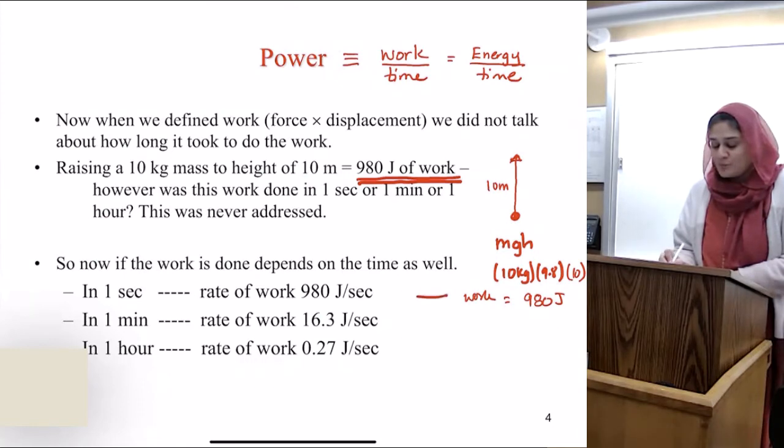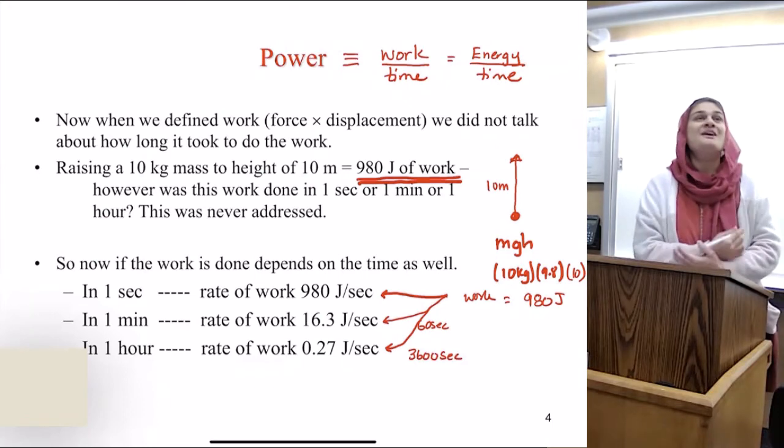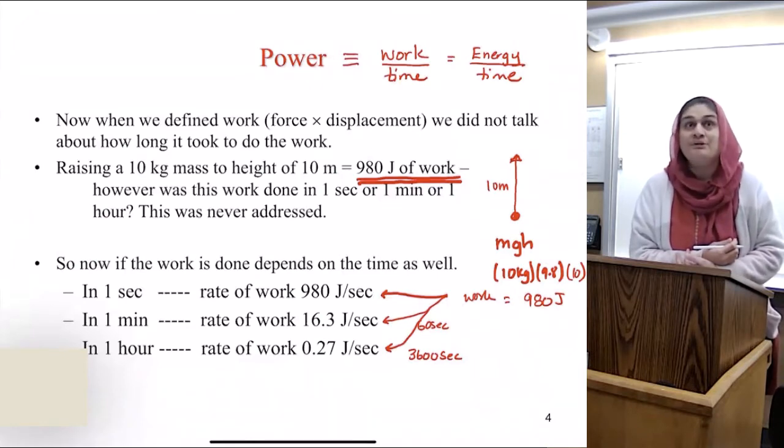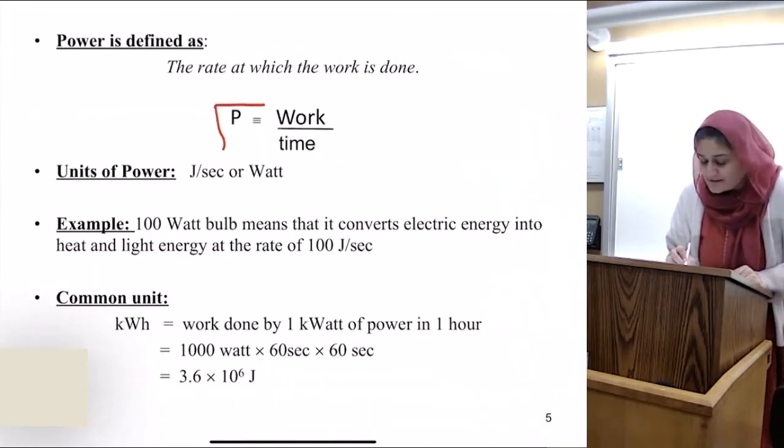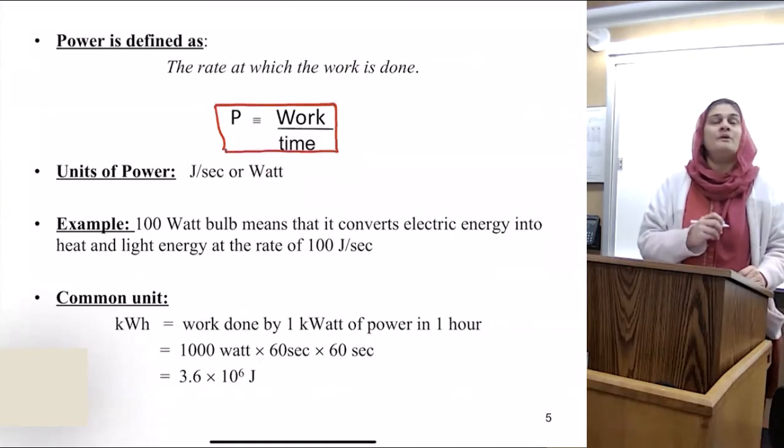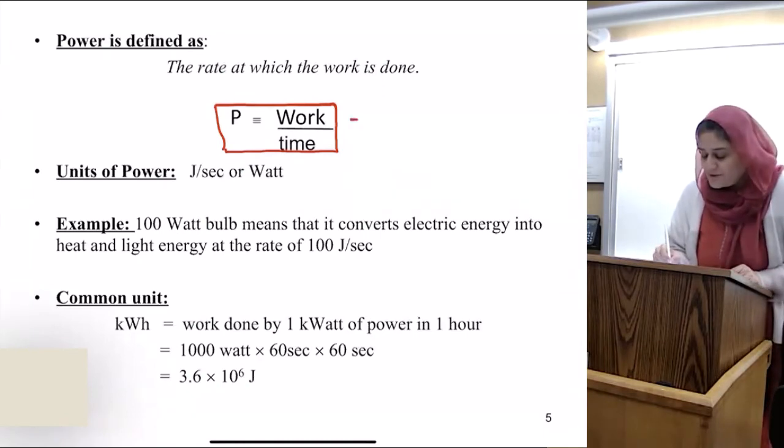And the answer is 980 joules of work needs to be done to raise it up. Now, if that work is done in one second, if that work is done in one minute, that is 60 seconds, or if that work is done in an hour, which is 3,600 seconds, determines how much power you're going to need. The faster you want something to happen, the more power you're going to need. So power is defined as the rate at which the work is done, or work per unit time, or energy per unit time.